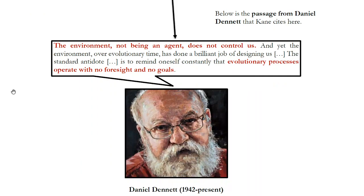Compatibilist philosopher Daniel Dennett says: the environment, not being an agent, does not control us. And yet the environment over evolutionary time has done a brilliant job of designing us — but evolutionary processes operate with no foresight and no goals. The way your body is set up as a human being comes from evolution — that's beyond your control. Your particular psychology will have to do with your genetic makeup, your upbringing and environment — all beyond your control. But although those things are beyond your control, it's not that you're being controlled by some tyrant or agent. It just means there are various causes of your actions you're not responsible for. That's very different from being manipulated.